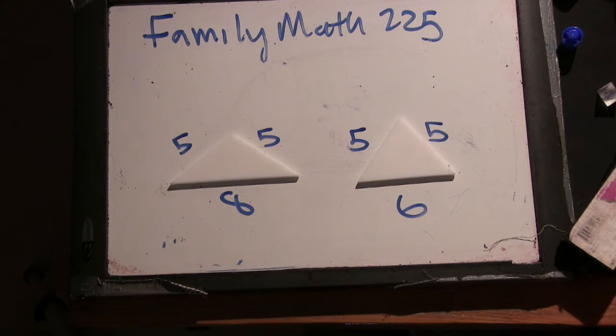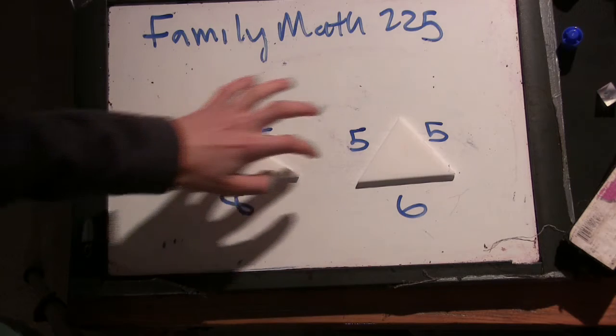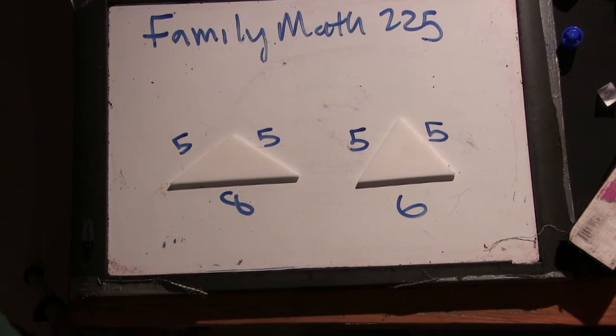Well, to find the area of a triangle we just need to do one half base times height. Yep. Except in these triangles we don't really know the height. We don't know the height. We don't know this length here, that length there. Okay.